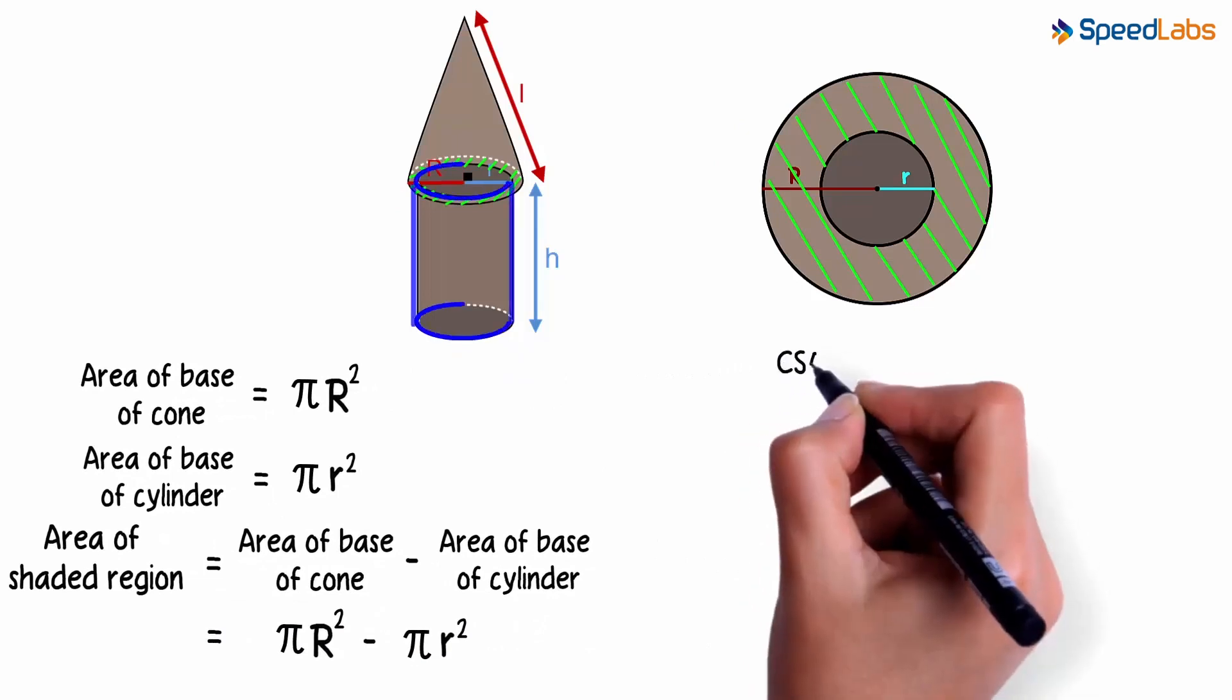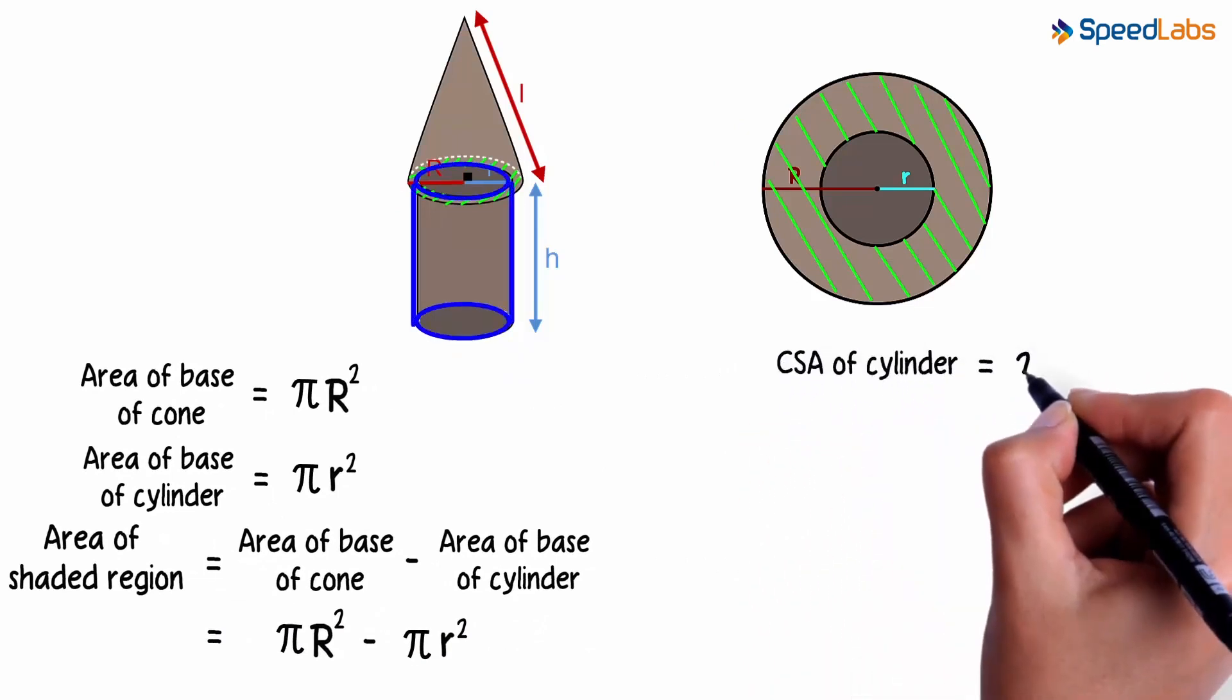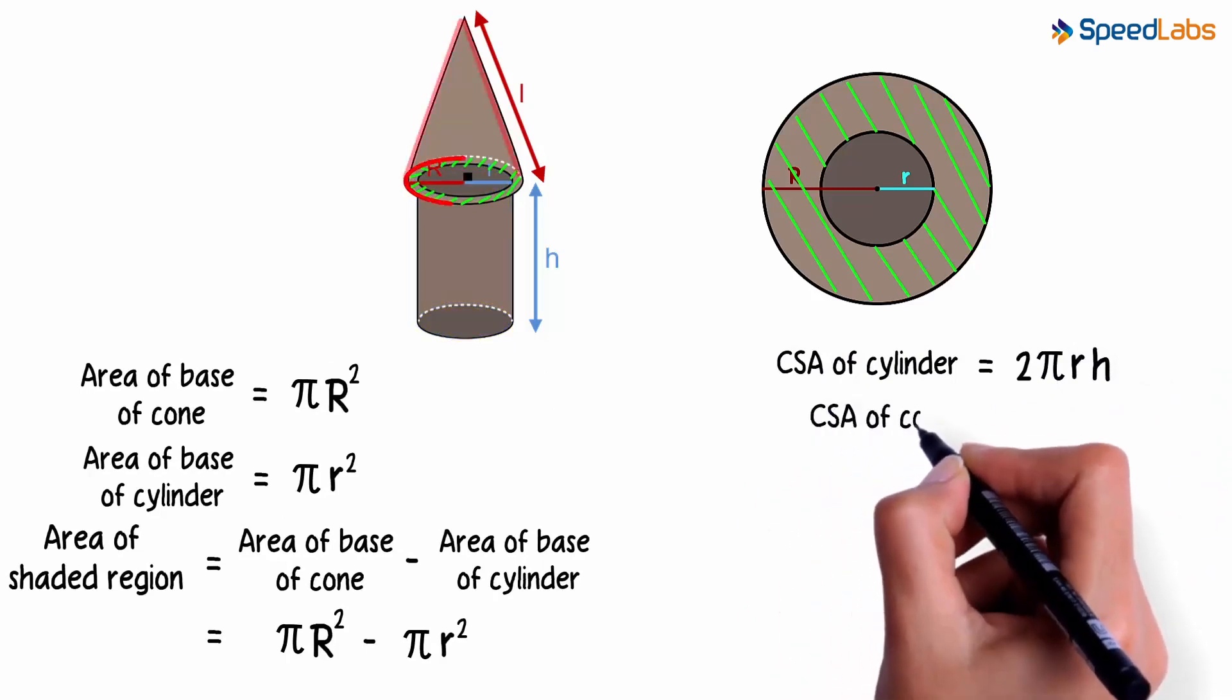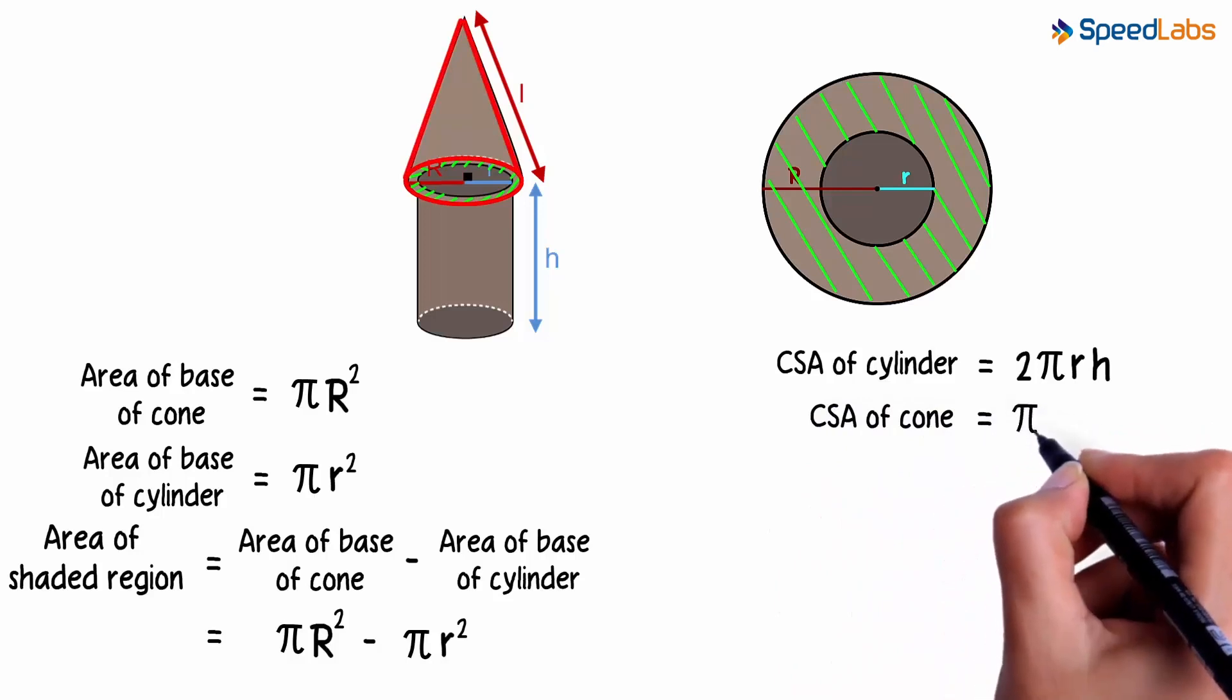We also know that curved surface area of the cylinder is 2 PI r h, and the area of its base is PI r squared. And what is the curved surface area of the cone? It will be PI R L.